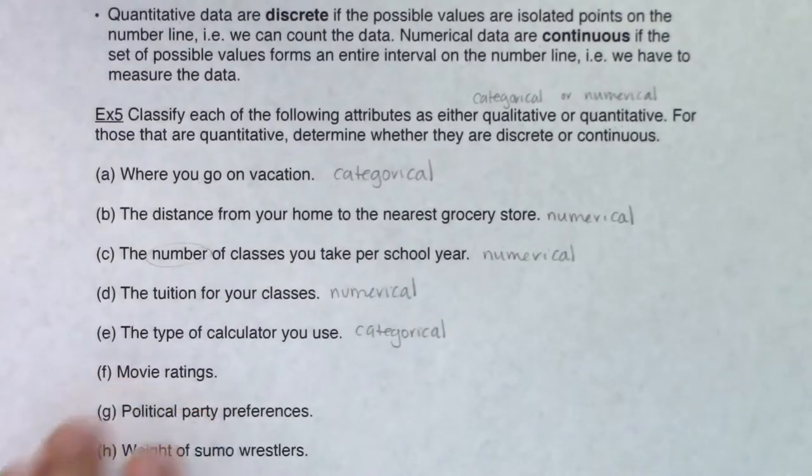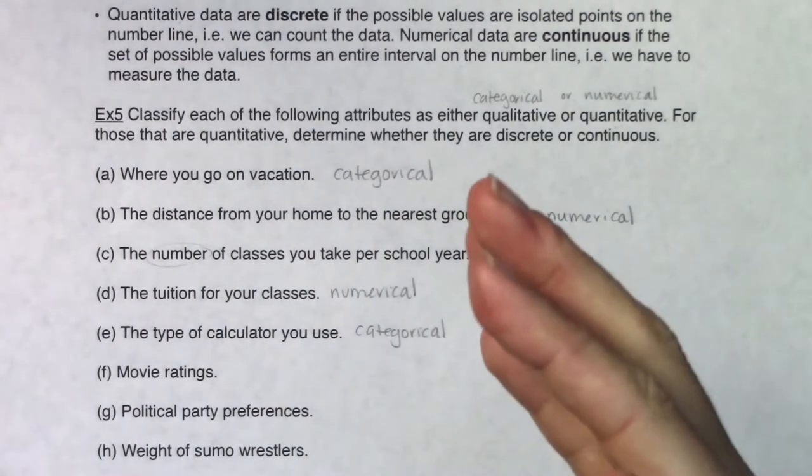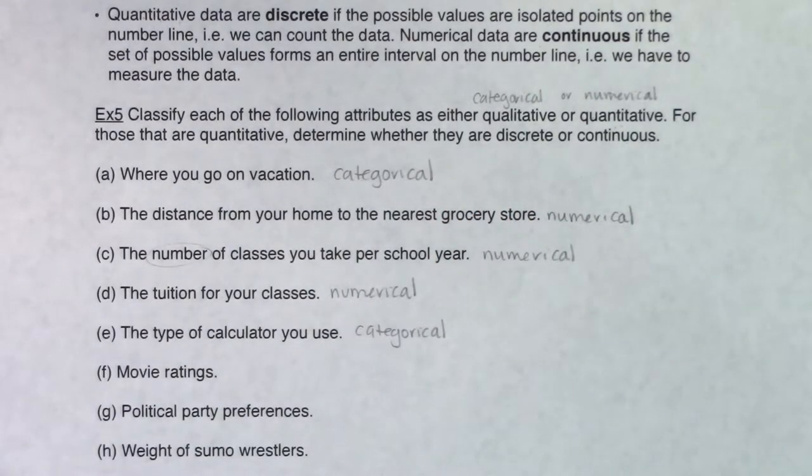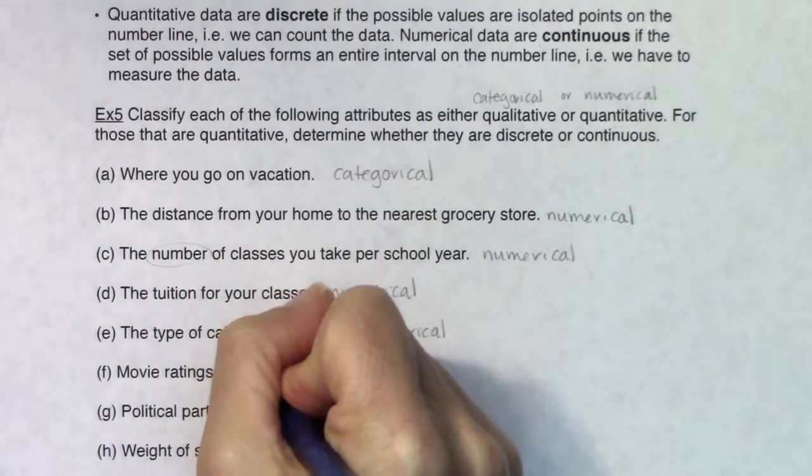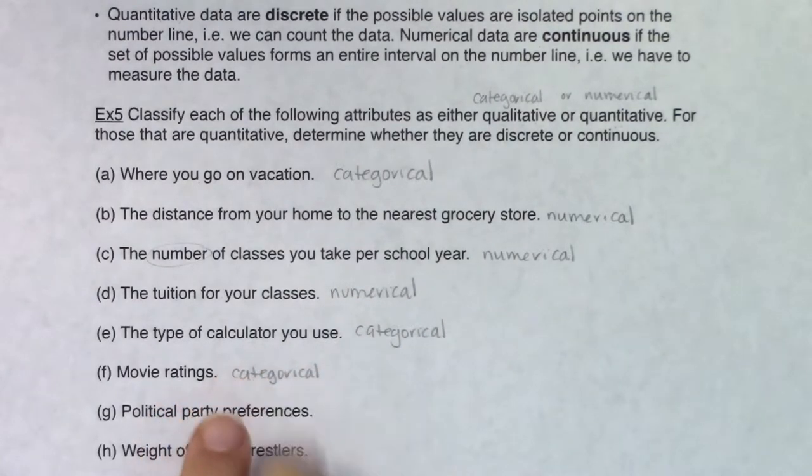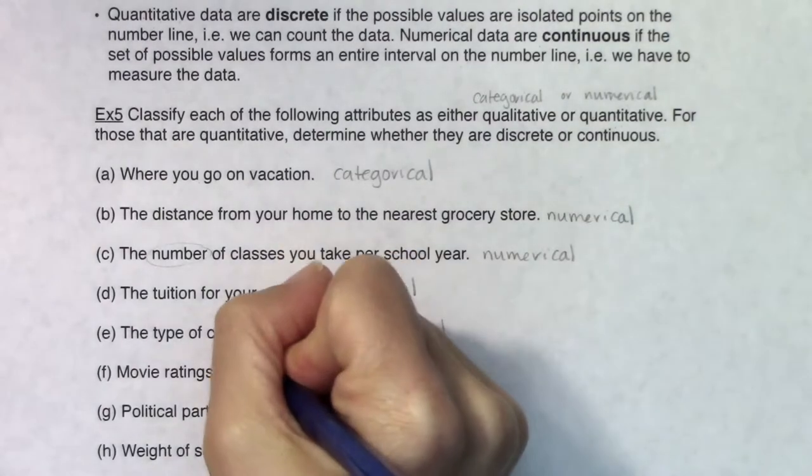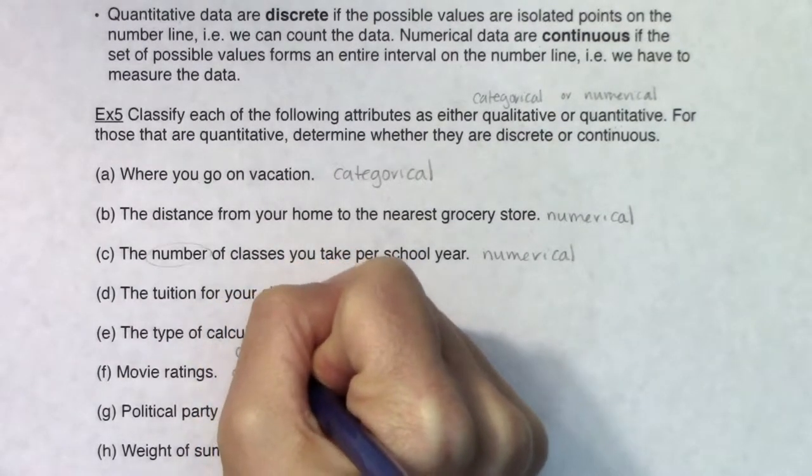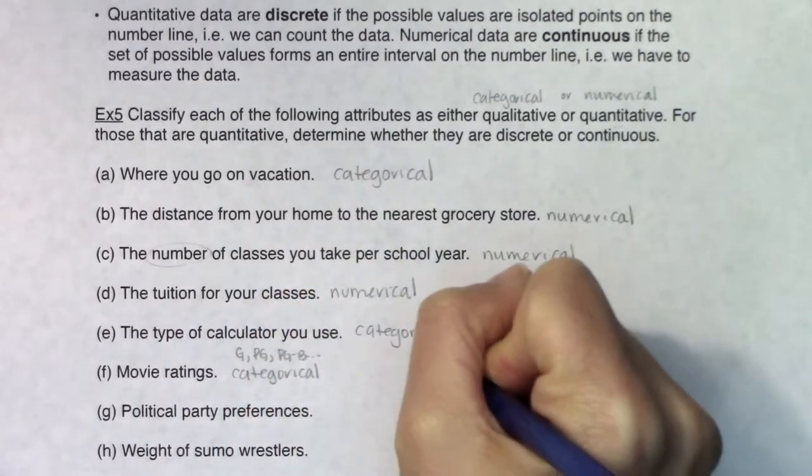In terms of movie ratings, I tend to age myself. When I hear movie ratings I think of G, PG, PG-13. If I'm going that way, I'm going to say that's categorical. I feel students usually hear movie ratings and they think of rotten tomatoes as a percent, like 80% rotten, 90% rotten. If you're going G, PG, PG-13, it's categorical.